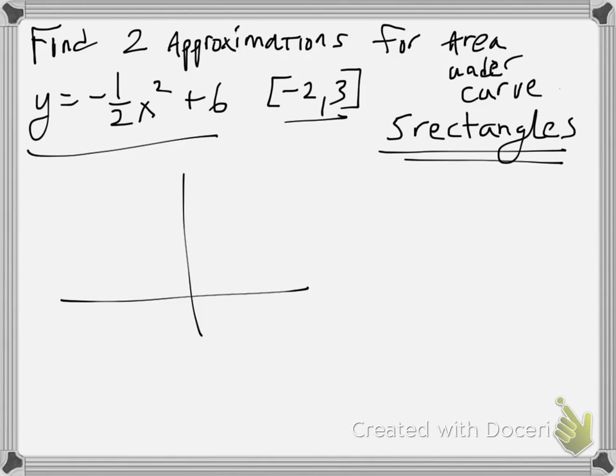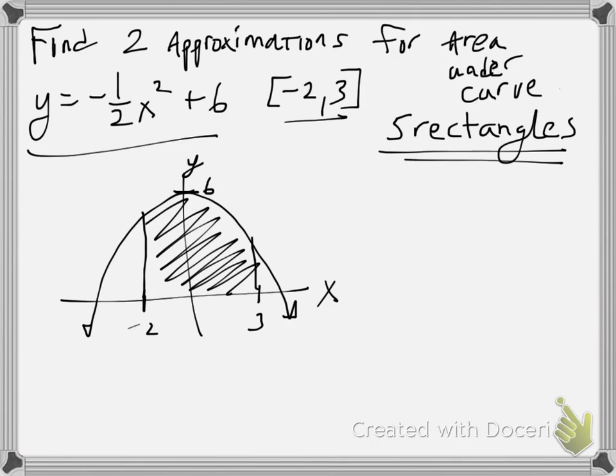This is a parabola, an upside-down parabola, and it's got a y-intercept of 6. It's pretty wide because it has a negative one-half, and it's facing downward. So it's something like this. Negative 2 is somewhere over here, and 3 is somewhere over here.